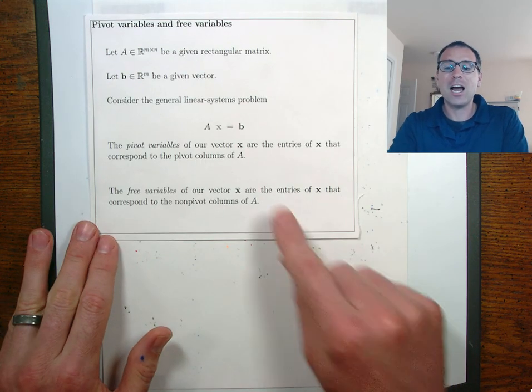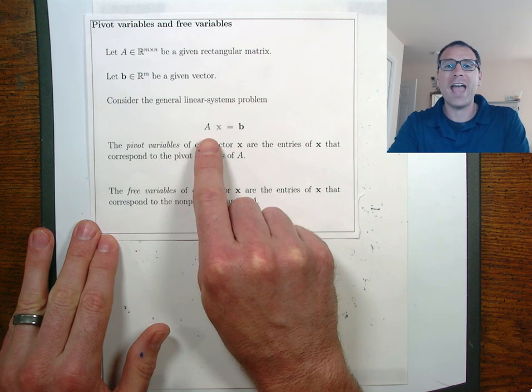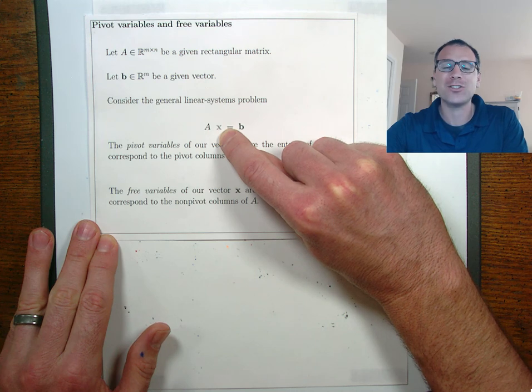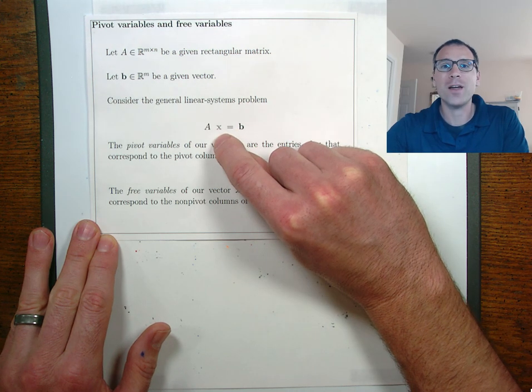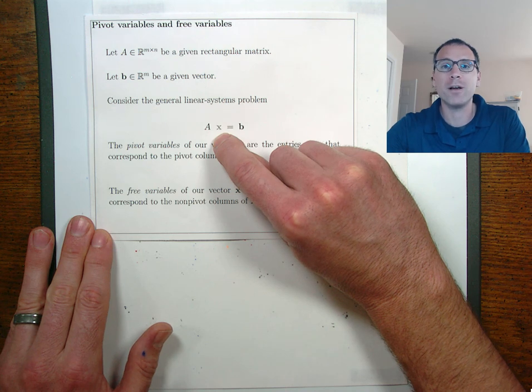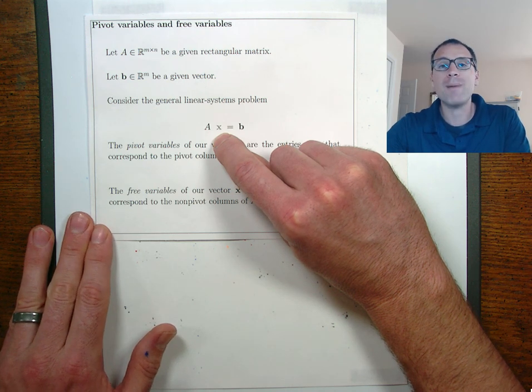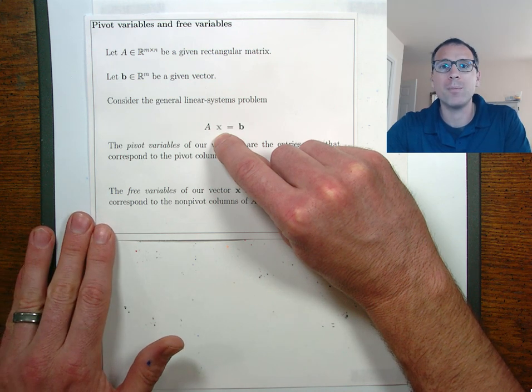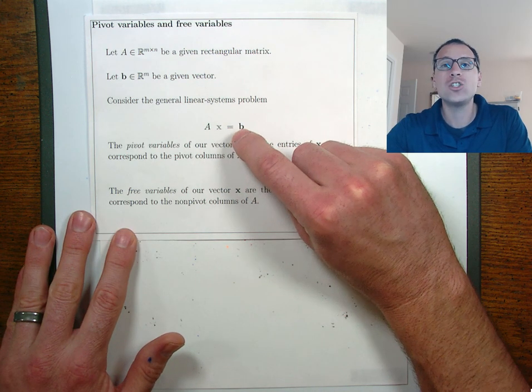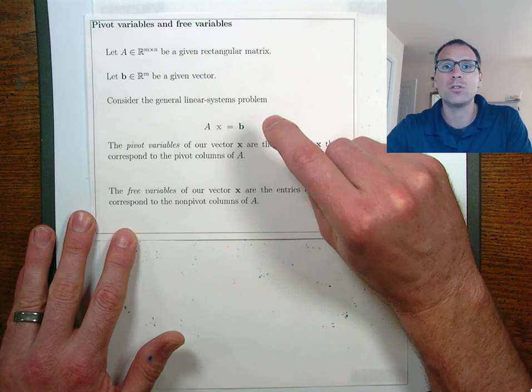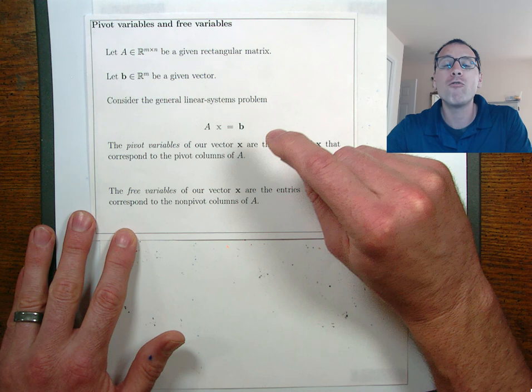More generally, anytime we're looking at a general linear systems with m rows and n columns, we can partition the individual entries of the vector x depending on whether or not those entries map to pivot columns - we call those entries pivot variables - or if those entries map to non-pivot columns, we should call those non-pivot variables. Because we are free to choose those when we take linear combinations of the special trivial solutions, we also call those free variables.